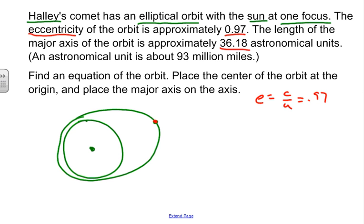So the major axis of the orbit is approximately that length. The major axis is going to go like that, and we know the major axis length is going to be 36.18. Since the major axis is 2a equals 36.18, we know that a is going to be 18.09 units.